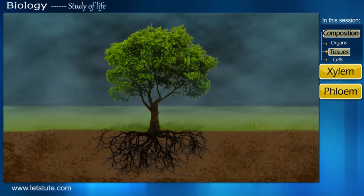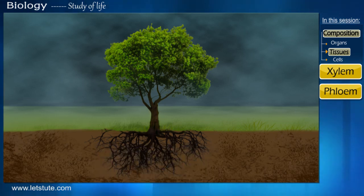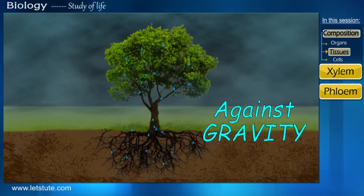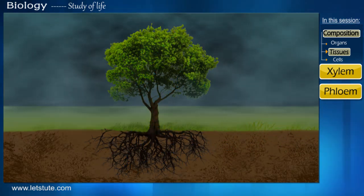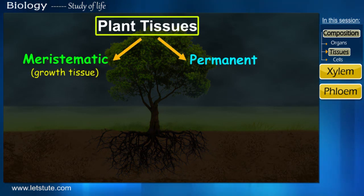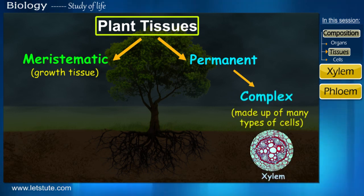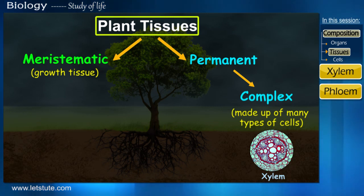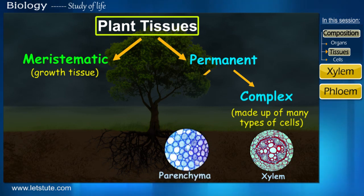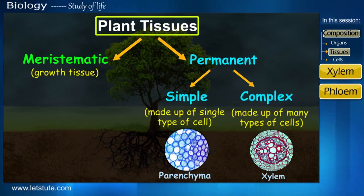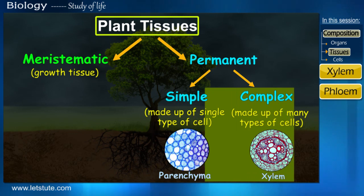So the main question here is: how does the water absorbed by the roots in the lowermost portion of the plant get transported to the various parts of the plant, and that too against gravity? To perform this important function, plants have a tissue made up of different types of cells. When a tissue is made up of different types of cells, we call it a complex tissue — in contrast to parenchyma, which is a simple tissue made up of just one type of cell.